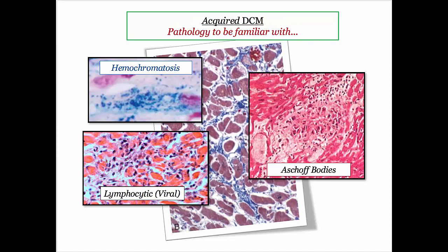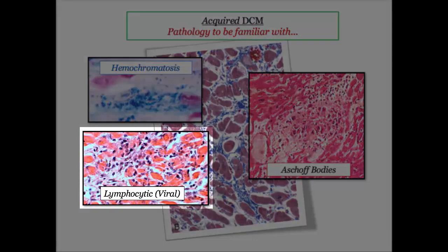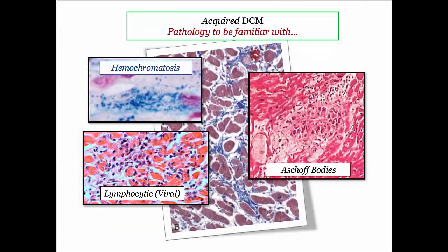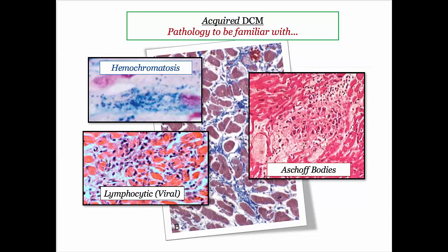For the acquired dilated cardiomyopathies, you should be familiar with three players. Prussian blue stain for iron overload in hemochromatosis — be aware that hemochromatosis can present with both restrictive or dilated cardiomyopathy. It is also fair game for them to give you a patient with a viral prodrome and heart failure symptoms and ask you to identify the pathology of a lymphocytic infiltrate. Finally, recall that acute rheumatic fever presents with valvulitis or dilated cardiomyopathy — the hallmark pathologic finding will be Aschoff bodies as reviewed in our rheumatic fever video.